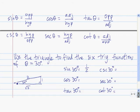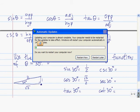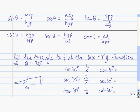Cosine of 30 degrees is the length of the adjacent side, which is root 3, divided by the length of the hypotenuse, 2. Tangent of 30 degrees is defined to be the length of the side opposite 30 degrees divided by the length of the side adjacent to 30 degrees. Then to find the other three, we just take the reciprocals. Cosecant of 30 degrees is the reciprocal of sine of 30 degrees, so that's 2 over 1, or just 2. Secant of 30 degrees is the reciprocal of cosine, so that's 2 over root 3. Cotangent of 30 degrees is the reciprocal of tangent, so it's root 3 over 1, which is root 3.